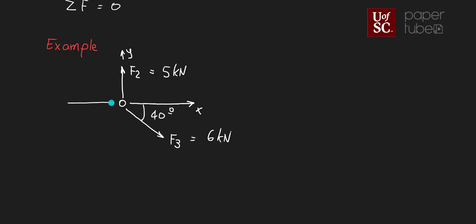We have a force F3 going in this direction and the magnitude of that is 6 kilonewtons. Here we have an angle of 40 degrees and over here we have an angle of theta which is unknown and a force F1 which is unknown. What we're trying to find is the magnitude of F1 and the angle theta.